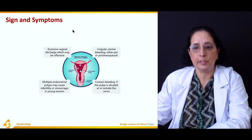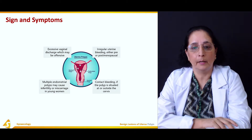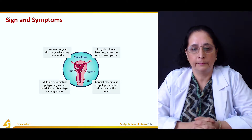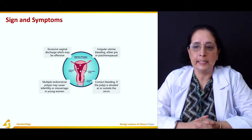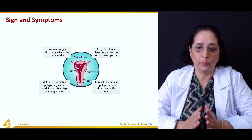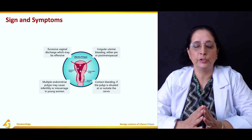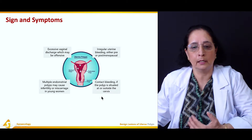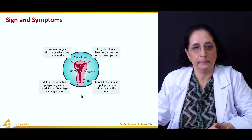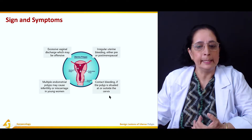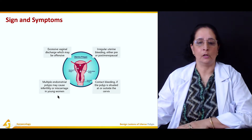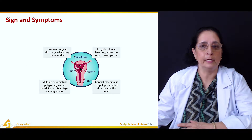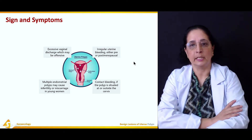The signs and symptoms of polyps include excessive bleeding or excessive discharge from the vagina, which may be offensive or foul smelling. There is irregular bleeding, either pre- or post-menopausal. Contact bleeding is common in cervical polyps — this occurs during intercourse or other handling. Multiple endometrial polyps may cause infertility or miscarriage in young women.